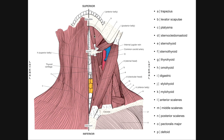Up in the suprahyoid region, we have the digastric — a similar two-bellied muscle. It has an anterior belly and a posterior belly joined via an intermediate tendon, which is held in a fascial sling attached to the hyoid bone.